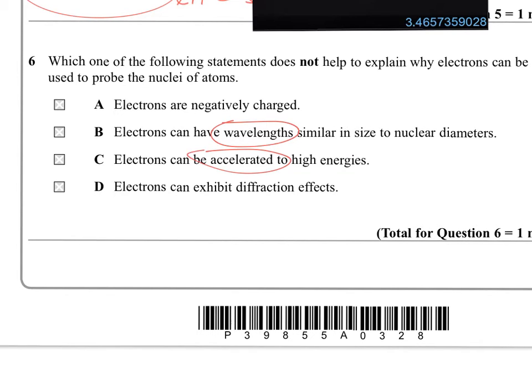So you can have wavelengths that are the right kind of sizes. They can be accelerated to give them such wavelengths. And they can exhibit diffraction effects. I think the issue here that's not relevant is the particle property of the electron, the fact that they're negatively charged.